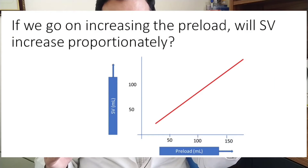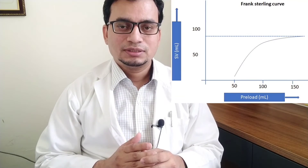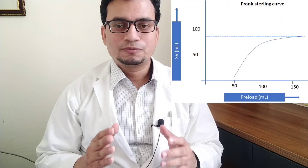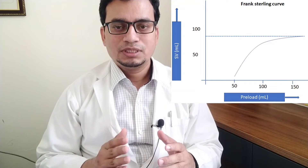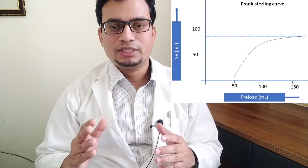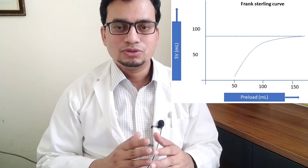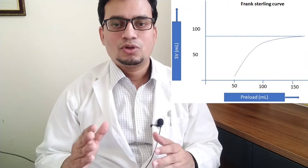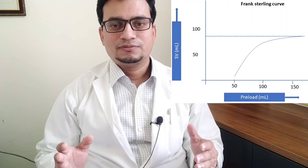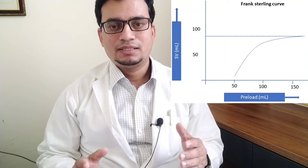Now the question is: if we keep increasing the preload, will stroke volume increase proportionately? Remember, there is a limit to everything — myocardial fibers will not be able to respond to the tension indefinitely, so there will be blunting after a certain point. Therefore the relationship between preload and stroke volume is not linear but curvilinear, called the Frank-Starling curve, which has an initially steep part and a later flat part.